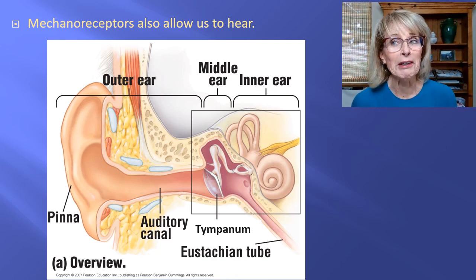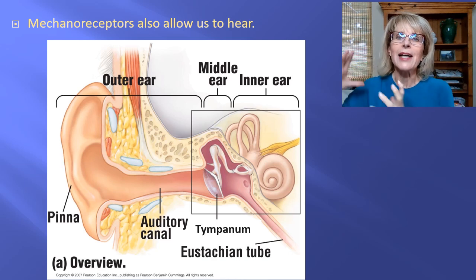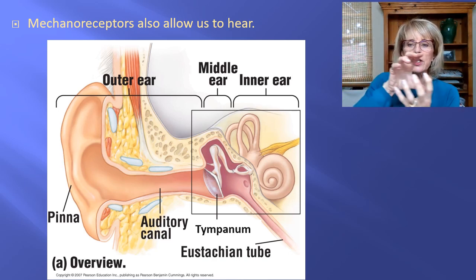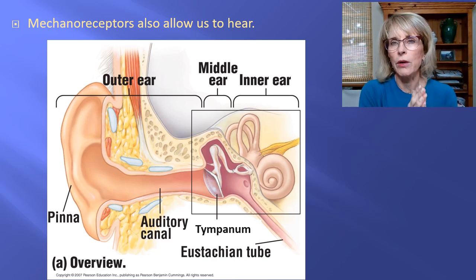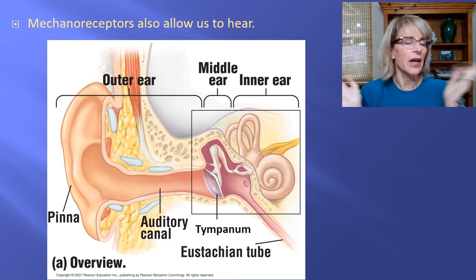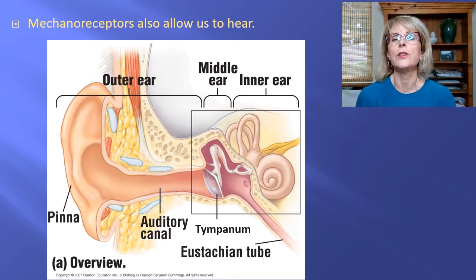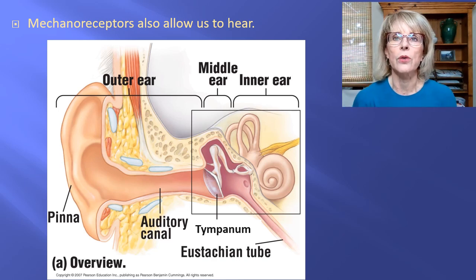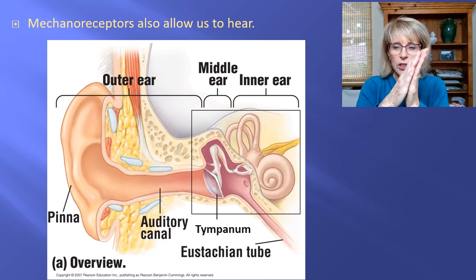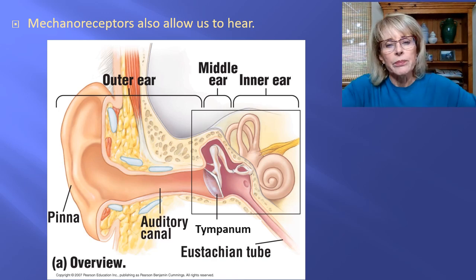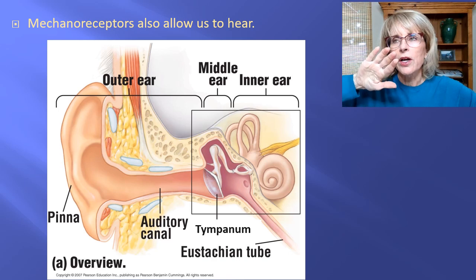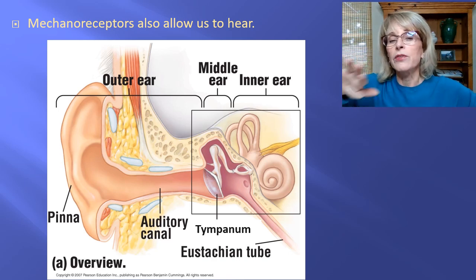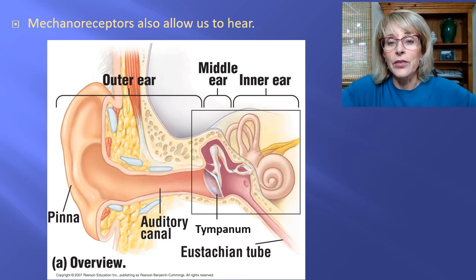The outer ear includes the pinna and the auditory canal, which grabs sound and channels it down to the tympanum. The tympanum is the boundary between the outer ear and the middle ear. The tympanum has no mechanoreceptor cells, and neither does the middle ear. The middle ear has those three little bones called the ossicles, whose job is to take the vibration of the tympanum and magnify it. Where the stapes comes in contact with the oval window, that mechanical force is turned into a wave of liquid that goes through the cochlea of the inner ear.